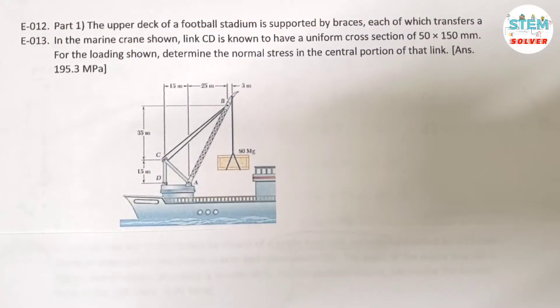In the marine crane shown, link CD is known to have a uniform cross-section of 50 x 150 mm. For the loading shown, determine the normal stress in the central portion of that link.